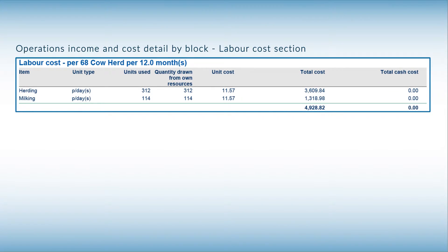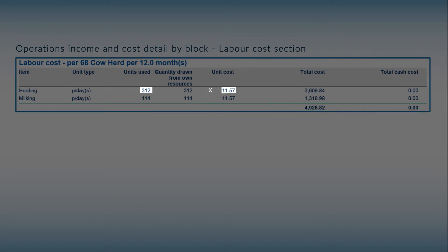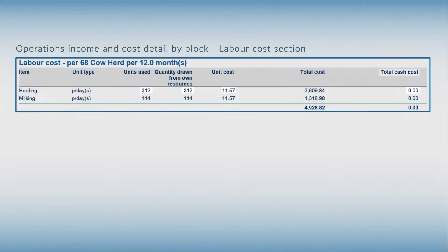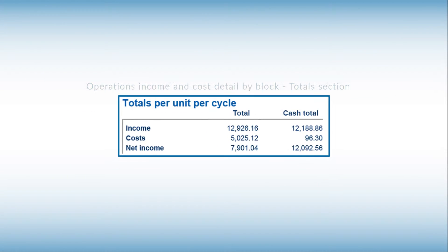Similarly, we can see that 312 person days are required for herding and 114 person days for milking the 68 cows in a 12-month cycle. But this labour is provided in-kind by beneficiaries and therefore not hired. As for the milk, this requires that the labour cost is entered into the software as part of total costs, not as cash costs. As a result, while the total cash net income of a 68 cow herd is 12,093,000 Tanzanian shillings, the total net income is only 7,901,000 Tanzanian shillings.